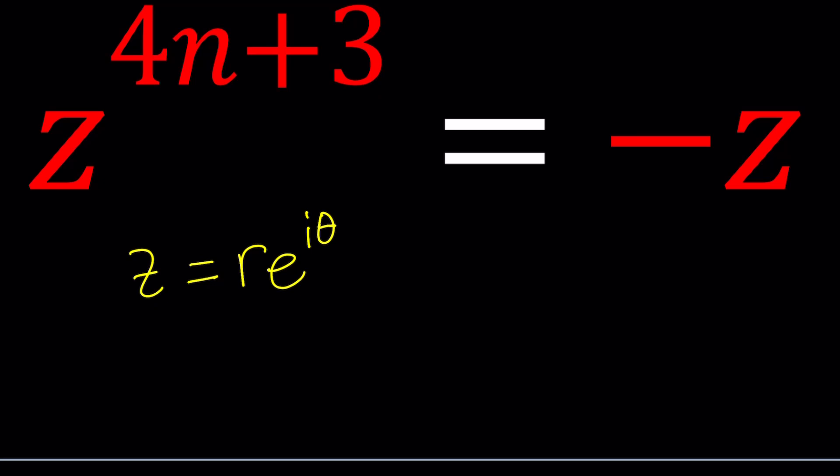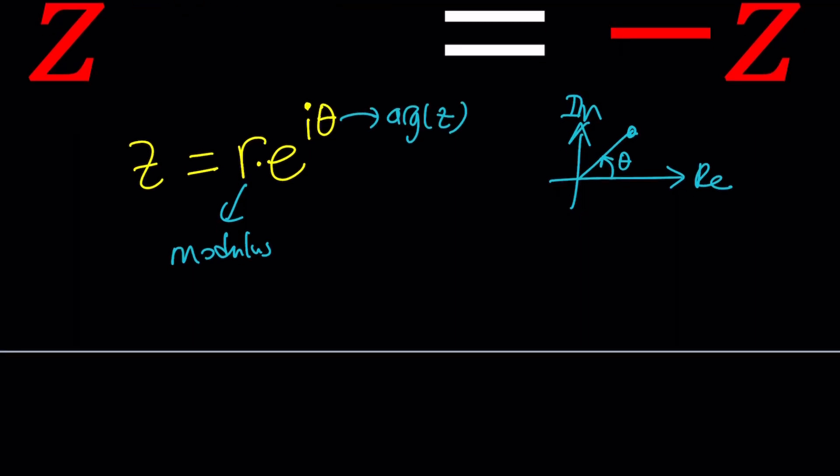z equals r times e to the i theta. Remember this is how you can write complex numbers using Euler's formula. This is the most compact form. r is the modulus or the absolute value and theta is called the argument. Which you can call arg z. And that is basically the angle between negative pi and pi that the angle makes. Well I'm talking about the principal value. But anyways you get the idea when you graph z something like this. This angle is called theta. This is the imaginary axis. This is the real axis. But we don't know what our number looks like. This is just generic.